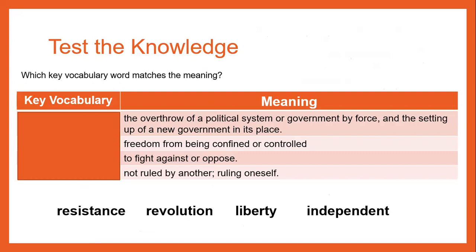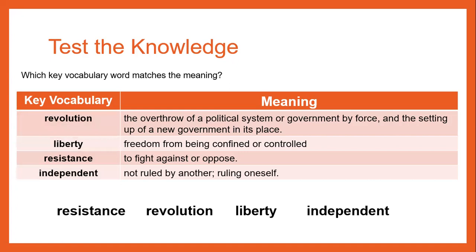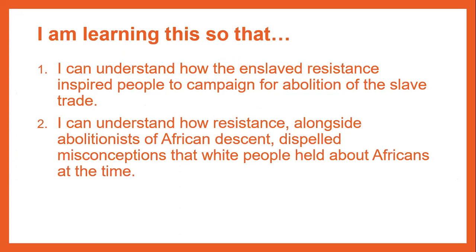Let's test our knowledge and match our definitions to our key words. The overthrow of a political system or government by force and setting up a new government in its place; freedom from being confined or controlled; to fight against or oppose; not ruled by another — ruling oneself. We've learned about this so that we can understand how enslaved resistance inspired people to campaign for the abolition of the slave trade, and how resistance, alongside abolitionists of African descent, dispelled misconceptions that white people held about Africans at the time. See you next time, Year 6.